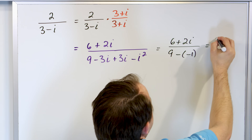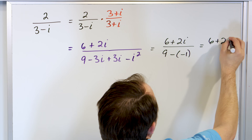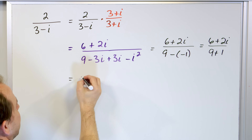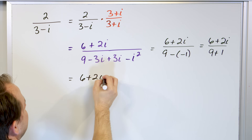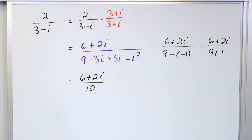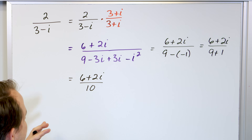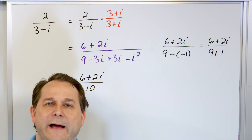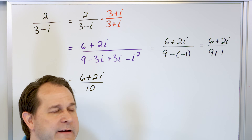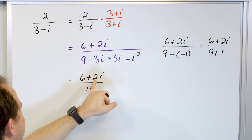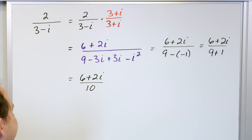What we have is six plus two i on top, and on the bottom nine plus one — because i squared is negative one, so the negative i squared becomes positive one. So that gives us six plus two i over ten. It's not yet written as a complex number in real-plus-imaginary form, and we can simplify since six, two, and ten are all divisible by two.